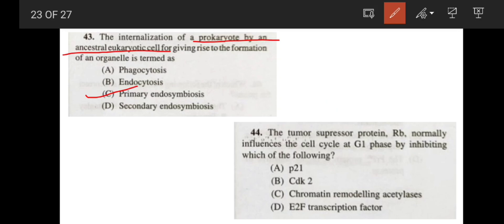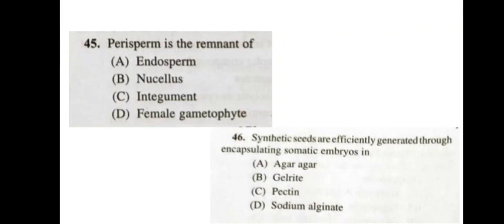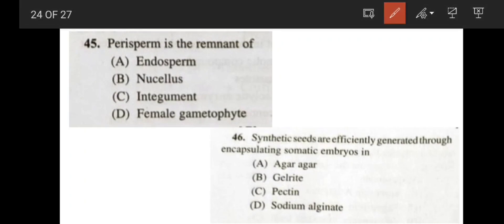Next, the tumor suppressor protein RB normally influences the cell cycle at G1 phase by inhibiting which of the following? RB binds to E2F transcription factor and it blocks the transition from G1 to S phase. But when RB gets phosphorylated, it releases the E2F and then E2F can express those proteins which are needed for the transition from G1 to S phase. So correct answer will be your option D. Now, coming to the question number 45, perisperm is the remnant of nucellus, option B.